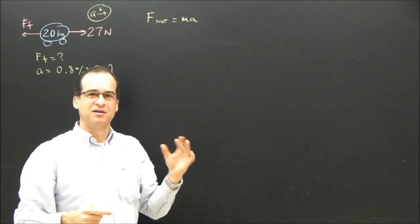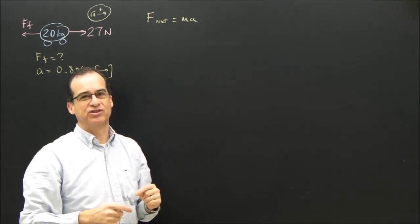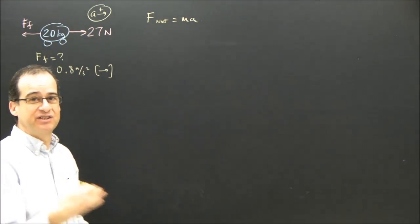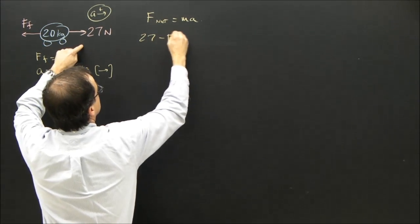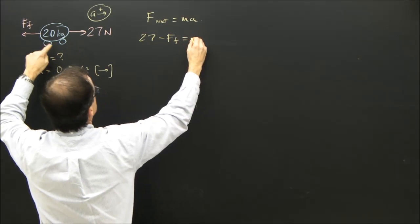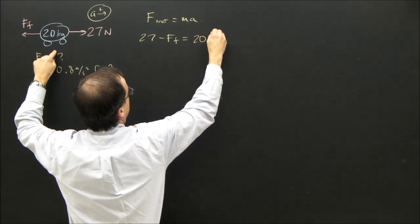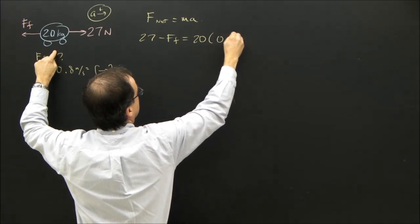What does F net mean? F net means out of all the forces that you see on the diagram in the direction of acceleration or in that plane. So I got 27 minus force of friction equals M. I know what M is, and I know what A is, 0.8.